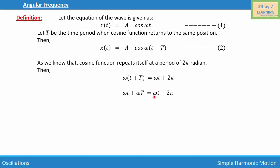Now, as you can see, ωt can be cancelled out. If we cancel ωt from both sides, we have ωT = 2π.